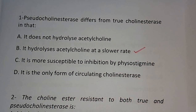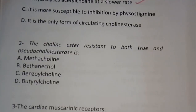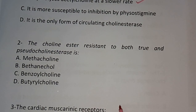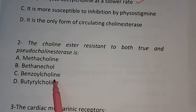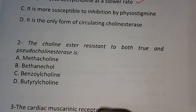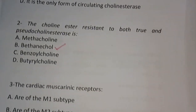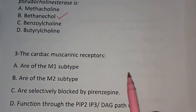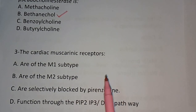Question number two: The cholinester resistant to both true and pseudo cholinesterases — options are methacholine, bethanechol, benzoylcholine, butyrylcholine. Bethanechol is the correct answer.